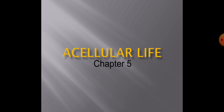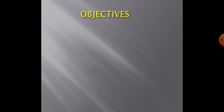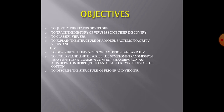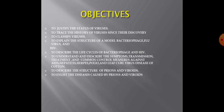As the name indicates, acellular means lacking a cellular structure. We are studying chapter 5 as chapter 4 needs detailed explanation in the classroom environment, so we will do that later on when you rejoin after the college opens. After studying this chapter, you will be able to understand various aspects of viruses like the status, history, discovery, classification, structure, life cycles, different viral diseases, and about the structure of prions and viroids and the diseases caused by them.